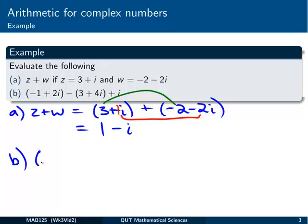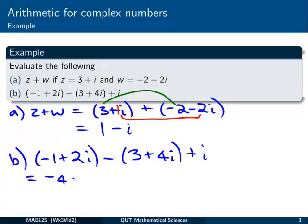The next one, part b, we've got minus 1 plus 2i as the first number. Oh, there's three numbers in this one, 3 plus 4i, taking that away, and then adding i at the end. So let's do it in order. I'll do the first one here. I've got minus 1, take away 3. If I subtract the real parts, that's minus 1 minus 3 is minus 4. And I've got 2i and minus 4i, so it's 2 minus 4 is minus 2i. And we still have that i sitting there on the end.